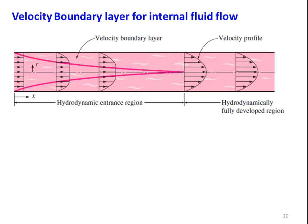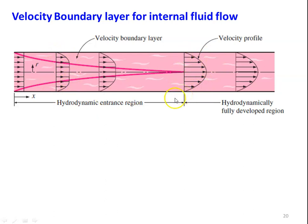For internal flow, we consider the velocity boundary layer inside a pipeline. The fluid enters with a uniform velocity profile; as it flows inside, boundary layers develop on the pipe wall — similar to the flat plate case — and eventually merge at the center. The entry region before the boundary layers merge is called the hydrodynamic entry length. Beyond this is the hydrodynamically developed region, where the velocity profile is parabolic: zero at the wall and maximum at the center.